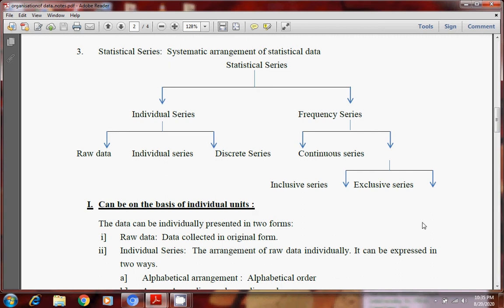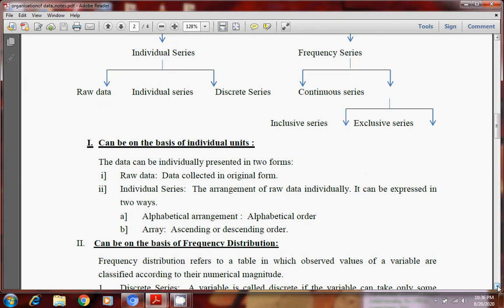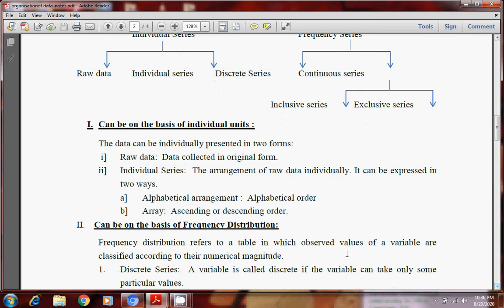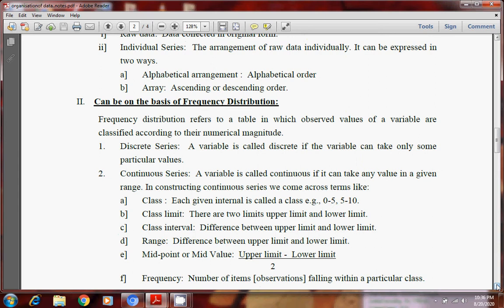First of all, data can be individually presented in two forms, raw or individual series. Data collected in original form is called raw data. Individual series, the arrangement of raw data individually, it can be expressed in two ways. Alphabetical arrangement, alphabetical order or array. It could be ascending or descending order. Then can be on the basis of frequency distribution. Frequency distribution means it refers to table in which observed value of a variable are classified according to their numerical magnitude.